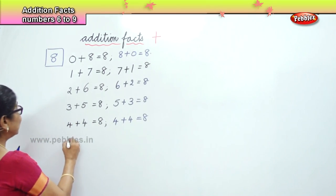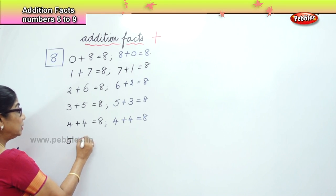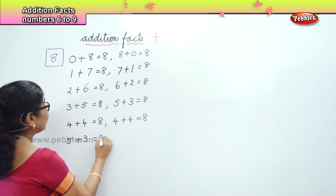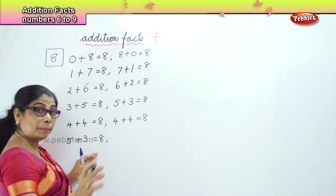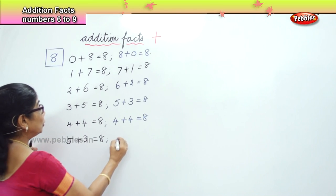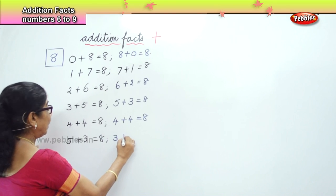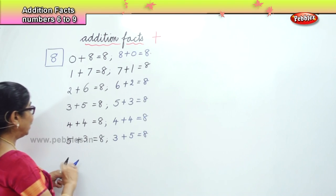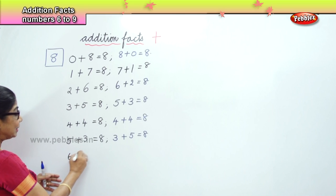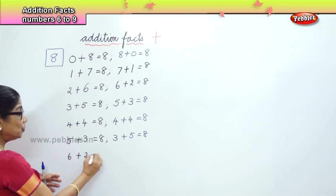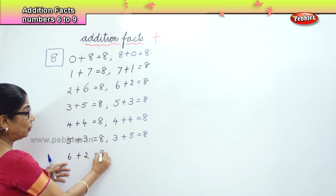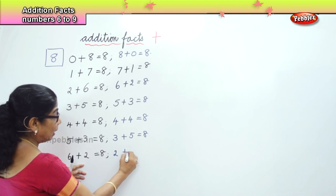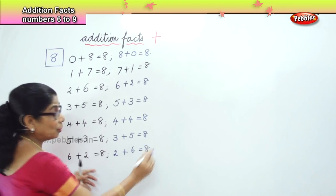Next: 5 plus 3 is equal to 8. The reverse is 3 plus 5, also equal to 8. After 5 comes 6. 6 plus 2 is equal to 8. And the reverse: 2 plus 6 is also 8.